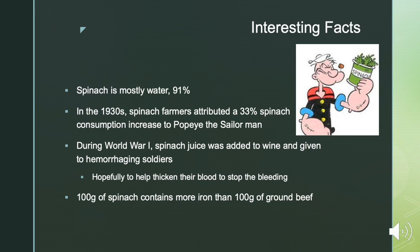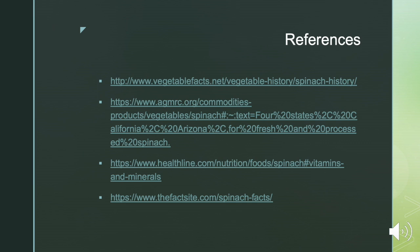Some interesting facts about spinach: like cucumbers and watermelons, spinach is mostly water, being 91% water. In the 1930s, spinach farmers attributed a 33% increase in spinach consumption to the popular cartoon Popeye the Sailor Man. He was often seen eating spinach, and this was a big deal because it was during the Great Depression, so a 33% increase was huge. Another fact is that during World War I, spinach juice was added to wine and given to hemorrhaging soldiers — they hoped it would help thicken their blood because they really believed in the health effects of spinach. Finally, 100 grams of spinach contains more iron than 100 grams of ground beef, which was very shocking to me.